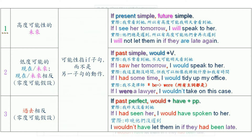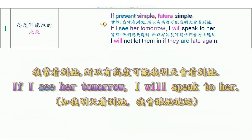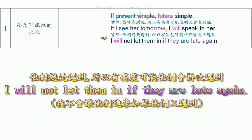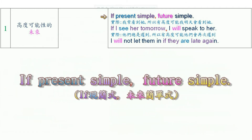Let's look at the first conditional. The concept of the first conditional is a future situation of high probability. Note that the probability is about the probability of the action in the if clause, not the other clause. For example: 'I see her quite often, so there is a high probability I will see her tomorrow. If I see her tomorrow, I will speak to her.' Another example: 'They are always late, so there is a high probability they will be late again. I will not let them in if they are late again.' In the first conditional, we use the present simple in the if clause and the future simple in the consequence clause.